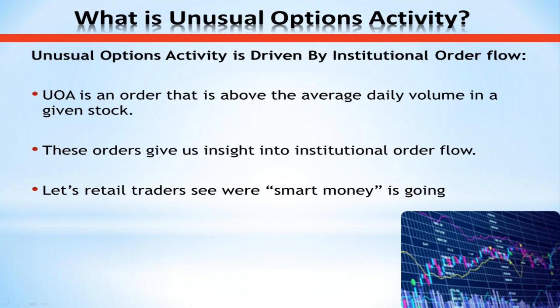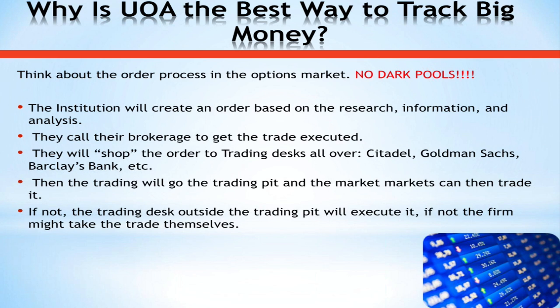Why does this only work in options? People ask me this all the time. How come we can't just look at the order flow in underlying stock and determine where big money is placing unusually large bets? The answer is because of dark pools.